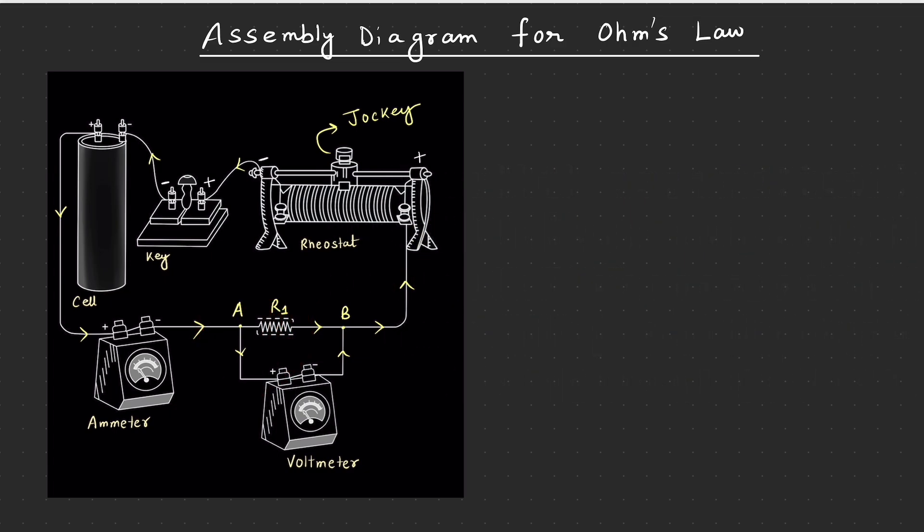Ab ammeter jo hai, this instrument is always connected in series whereas voltmeter jo hai, that is always connected in parallel.